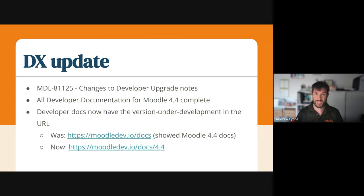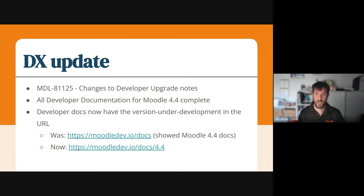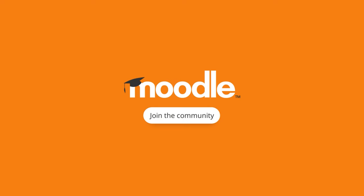We also made a minor change to the developer documentation just before the release so that permalinks will work, so any links created to things like the DevUpdates documentation will continue to work after the release. Previously, the documentation for the currently in-progress version was at the SlashDocs path, and that's been moved to a versioned path instead, which is something that was requested during Moodle 4.3's release, and we've now done.